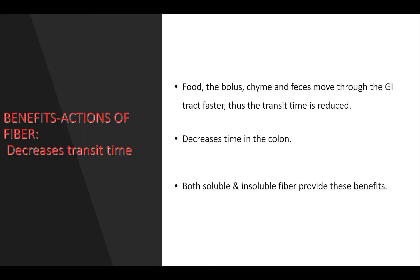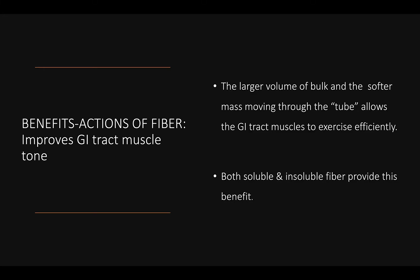Fiber decreases transit time. So food — the bolus, the chyme, feces — all move through the gastrointestinal tract more quickly when you have a high fiber diet; thus the transit time is reduced. Both soluble and insoluble fiber provide these benefits. Fiber also improves the muscle tone of the gastrointestinal tract. When you're using muscles, they work more efficiently, and your gastrointestinal tract really isn't any different. Both types of fiber provide this benefit.